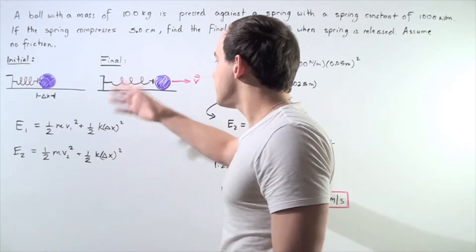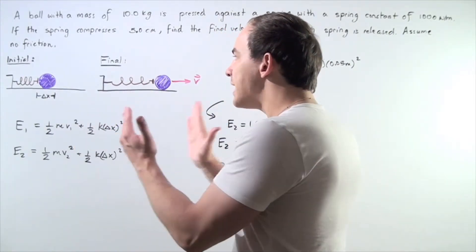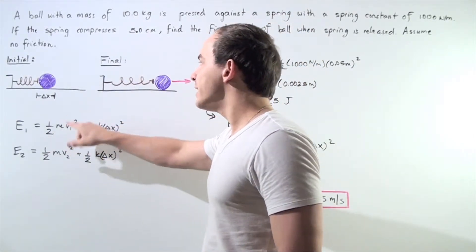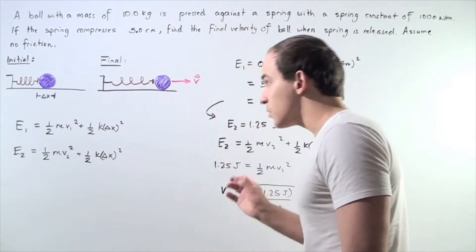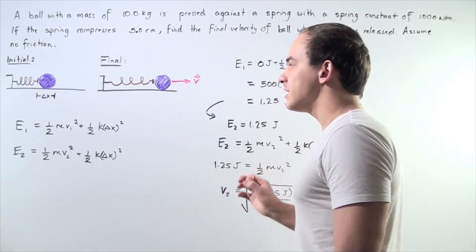Elastic potential energy is the energy stored in our spring. The k is simply our spring constant, the change in x is simply our displacement, the distance the spring is compressed, and our V1 in this case is zero.